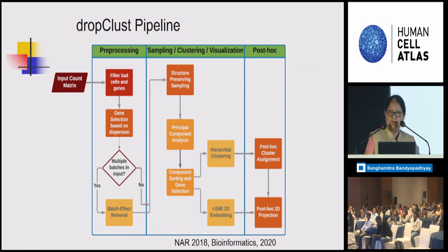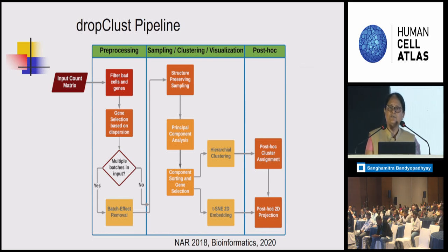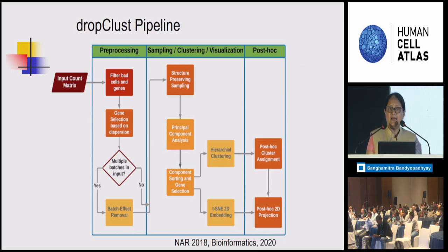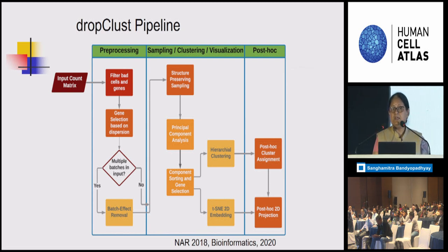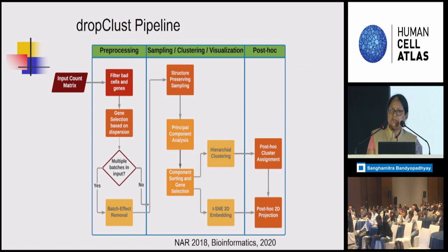We start with the input count matrix. We filter bad cells and bad genes defined in certain ways, and do a first level of gene selection using a dispersion factor. In the second version of this algorithm, we've also taken into account batch effects, which often confound the analysis, as data is taken at different time points on different machines. Batch effects must be distinguished from the biological signals. After that, we do structure-preserving sampling — the key part of this clustering method.